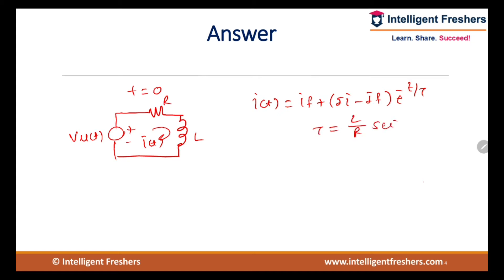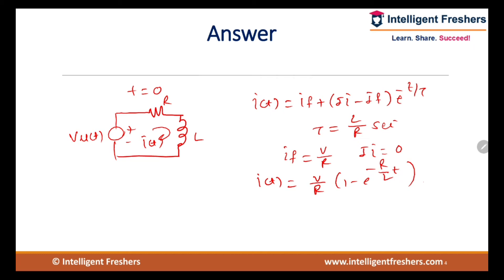The final current — the inductor will act as a short circuit — so the final current is V/R. The initial current is given as zero. So i(t) = (V/R)(1 − e raised to minus t by tau). Substituting the value of tau: i(t) = (V/R)(1 − e raised to minus R/L · t). Then di/dt = (V/R) · (R/L) · e raised to minus R/L · t.